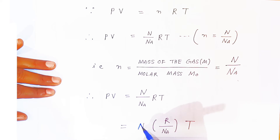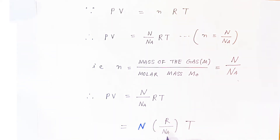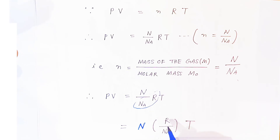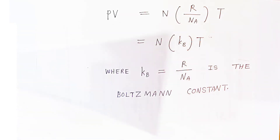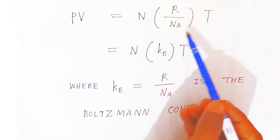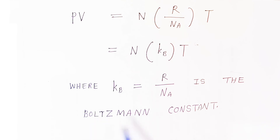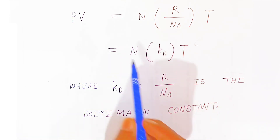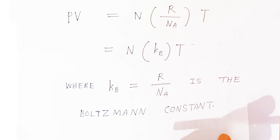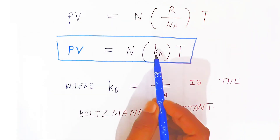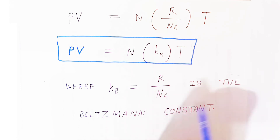We can rewrite this as PV = N × (R / Nₐ) × T. Since R and Nₐ are both constants, their ratio R / Nₐ is also a constant — this is called the Boltzmann constant, denoted kB. Therefore, PV = N × kB × T.